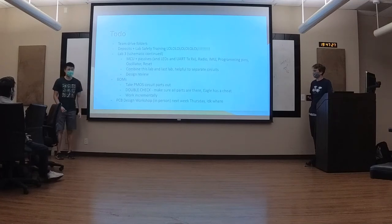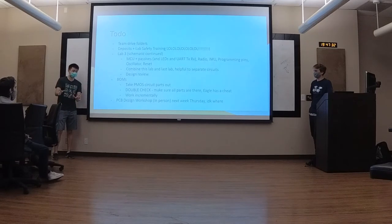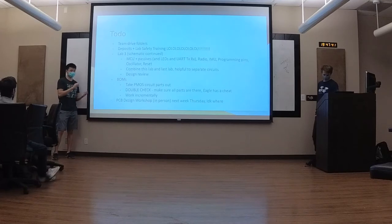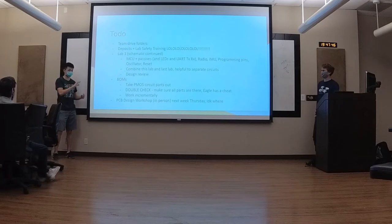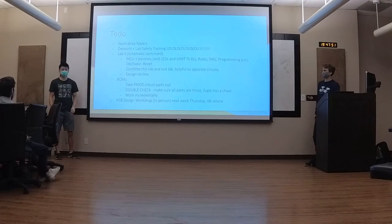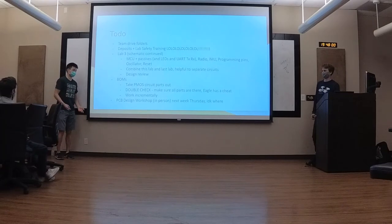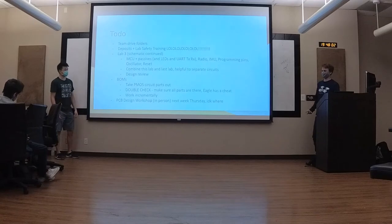One thing some people didn't know: when you open Eagle and have a schematic, on the left side there's a list of parts you're using inside your schematic. It will literally list out R1, R2, R3 with all their values. Every single part there should be accounted for in your BOM. We'll give you your motor ESCs; you won't need to buy the actual battery because we're buying it for you. But make sure everything is documented.